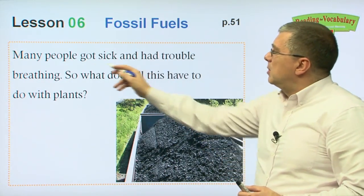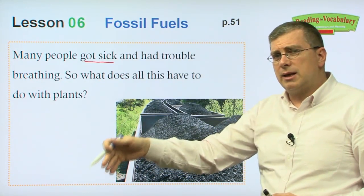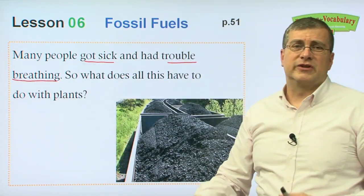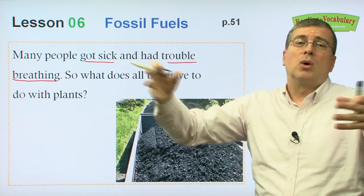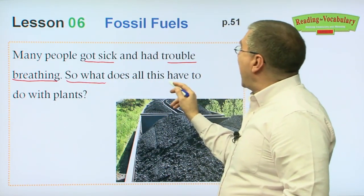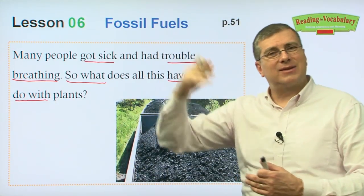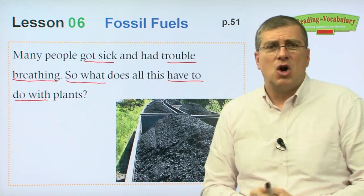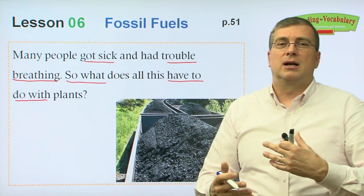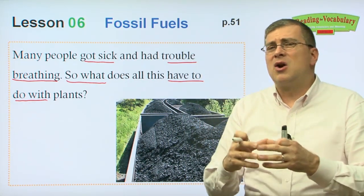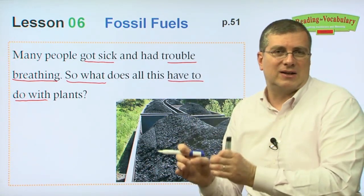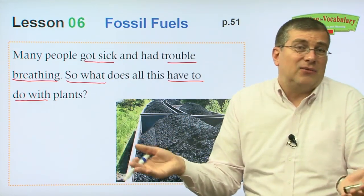Many people got sick and had trouble breathing because of all this air pollution — so much smoke in the air that they couldn't see the sun, and people were breathing that smoke. So what does all this have to do with plants? We come back to the question from the beginning of the passage: what do plants have to do with pollution? What's the connection between fossil fuels, burning, smoke mixing with clean air, and plants? What is the cause-and-effect relationship?